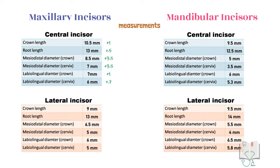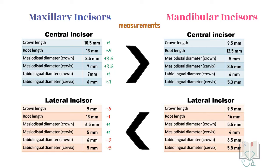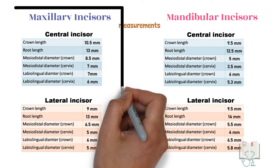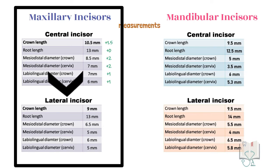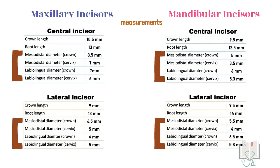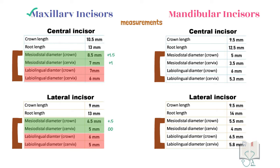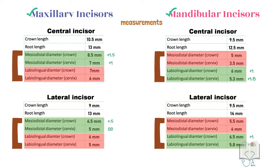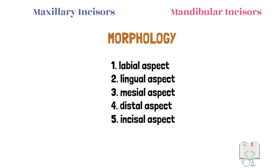The maxillary central incisor is clearly larger than the mandibular central incisor in all dimensions. However, the maxillary lateral incisor is smaller than the mandibular lateral incisor except in the mesiodistal dimension. Within the arches, in the maxillary arch the central incisor is larger than the lateral incisor, but in the mandibular arch the opposite is true — the lateral incisor is larger than the central incisor. In maxillary incisors the mesiodistal diameter is more than the labiolingual diameter, but in mandibular incisors the labiolingual diameter is more than the mesiodistal diameter.